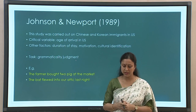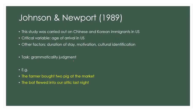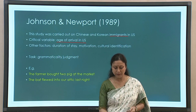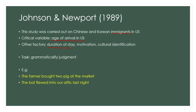Another very influential study is Johnson and Newport 1989, carried out on Chinese and Korean immigrants in the US. In this study there were many variables used — not only age but also the age of arrival in the US, which basically captured how many years these immigrants had spent there. Additional variables included motivation, cultural identification, duration of stay, and others — essentially social variables combined with language exposure.